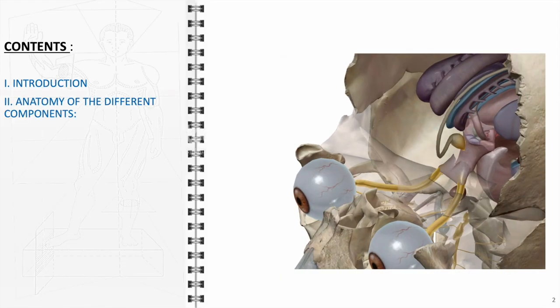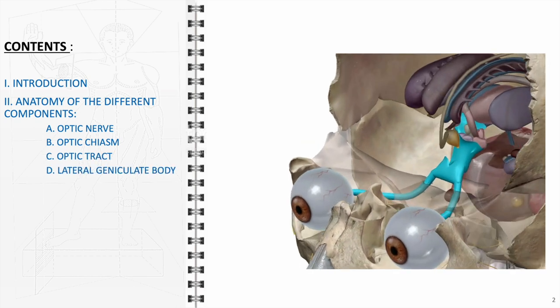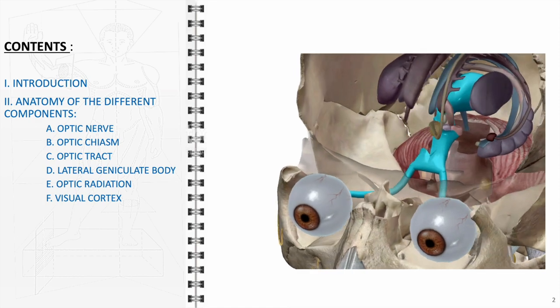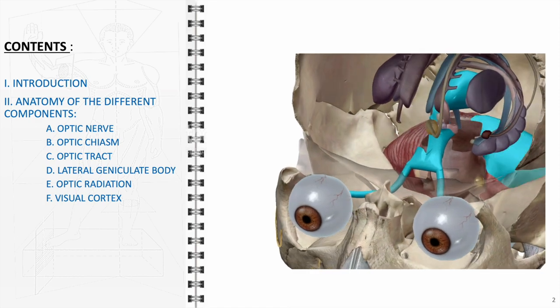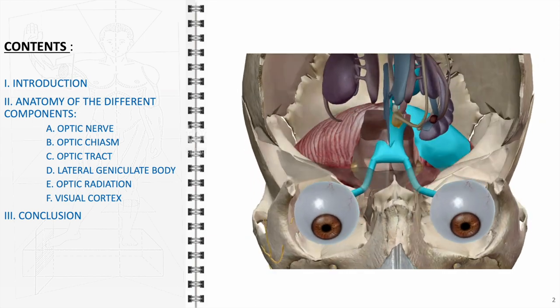Our journey begins with an introductory overview of the visual pathway. We'll then proceed to meticulously describe each component, including the optic nerve, optic chiasm, optic tract, lateral geniculate body, optic radiations, and the visual cortex, highlighting their unique roles and interconnections. Finally, we will conclude with a comprehensive summary, emphasizing the significance of these components in visual processing and perception.